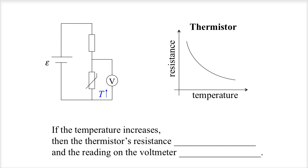Let's think this through. If you increase the temperature, the resistance does the opposite—goes down. And if this bottom resistor has less resistance, then it uses less of the EMF. So the voltage, the potential difference, goes down.